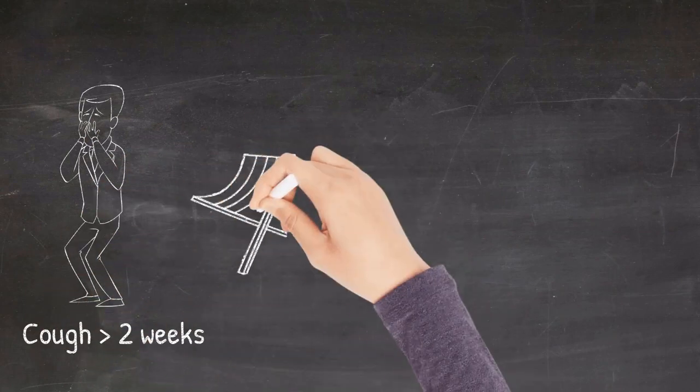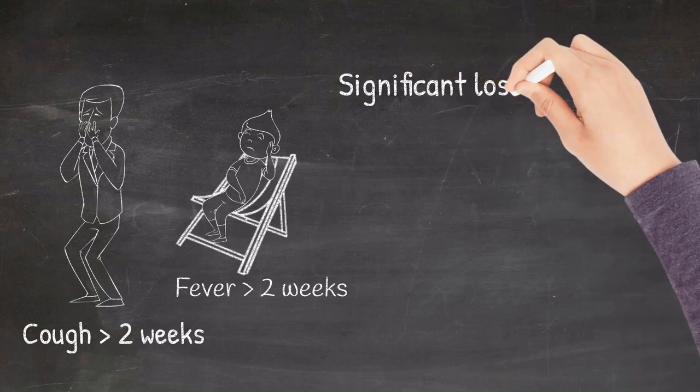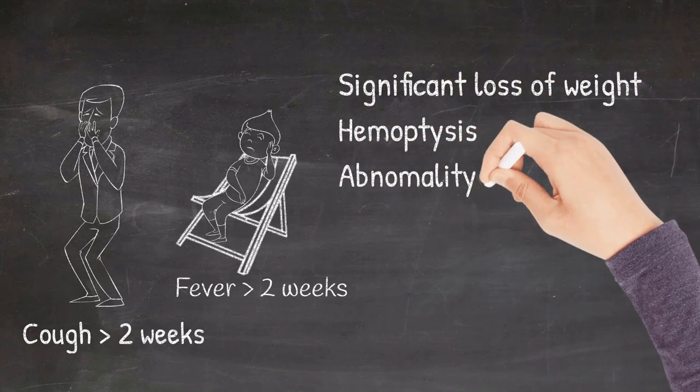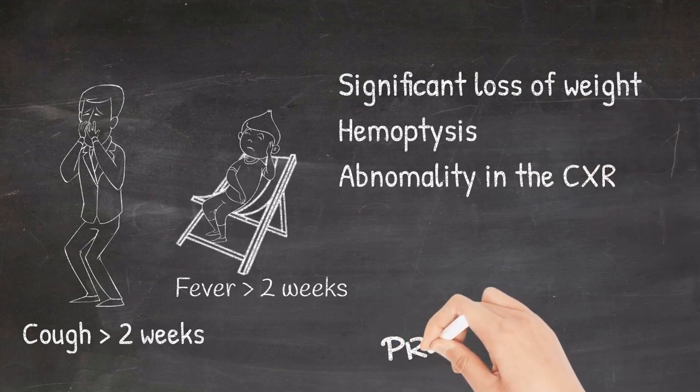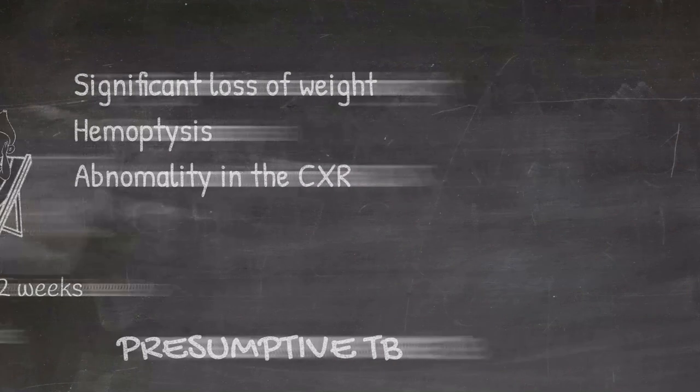Any patient presenting with a cough of more than two weeks, fever for more than two weeks, significant loss of weight, hemoptysis or abnormalities in chest x-ray is known as presumptive tuberculosis, which is known earlier as pulmonary TB suspect.